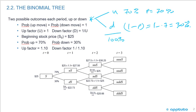The up factor has to be greater than 1 because the stock price is rising. The important thing to remember is that the down factor is 1 divided by the up factor.